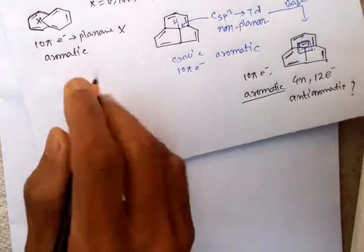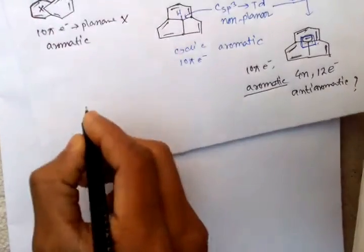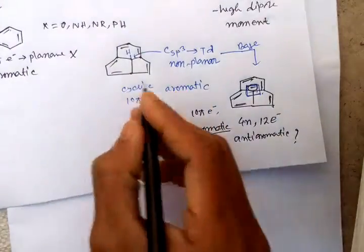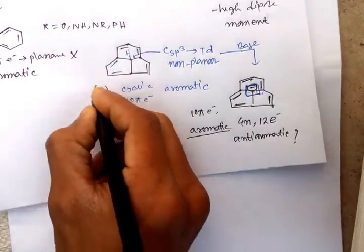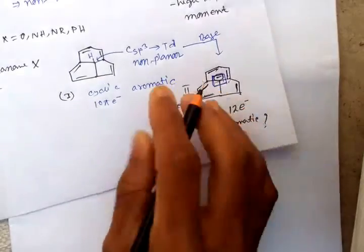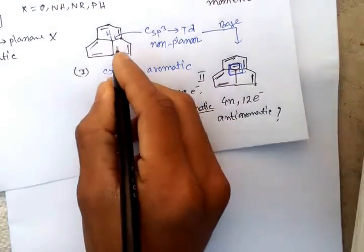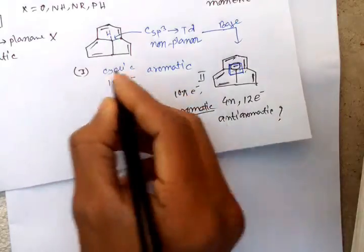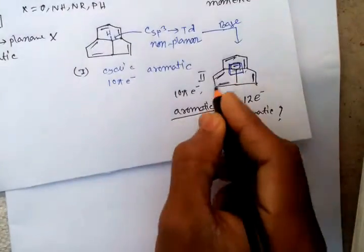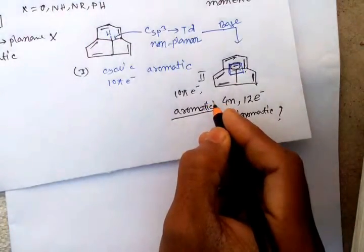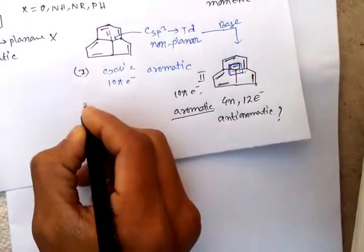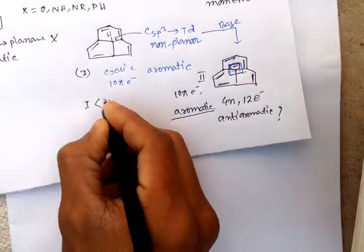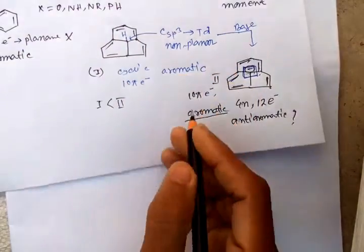Another system is annulene. Here, structure 1 is non-planar but planarity is enough for sufficient overlapping, and structure 2 is a planar structure. So the aromatic character of structure 2 is greater than structure 1.